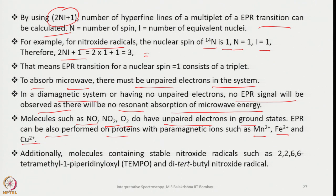Additionally, molecules containing stable nitroxide radicals such as 2,2,6,6-tetramethyl-1-pyridinyl oxide (TEMPO) and di-tert-butyl nitroxide radicals are commonly studied by EPR.